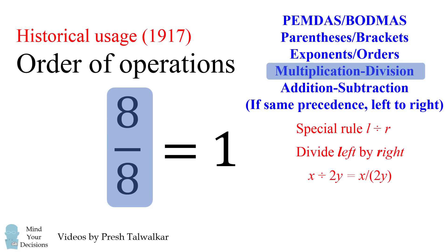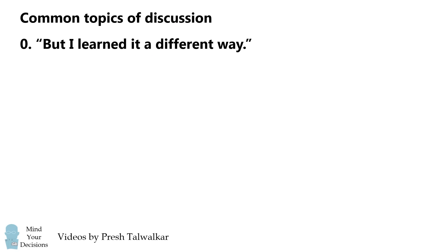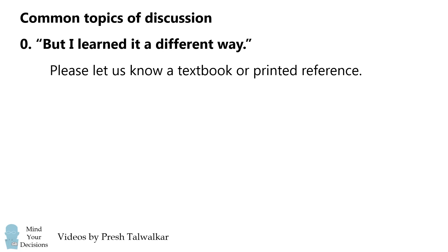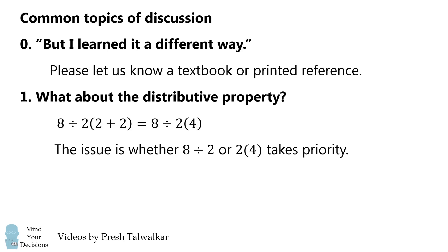This is not the correct answer today. Some people will say they learned it a different way — please let us know a textbook or printed reference, because we always want to learn how math was taught over the years. What about the distributive property? It really doesn't have anything to do with the correct answer. 8 divided by 2, parentheses 2 plus 2, is definitely equal to 8 divided by 2 multiplied by 4. The question is whether to do 8 divided by 2 first, or 2 multiplied by 4 first.